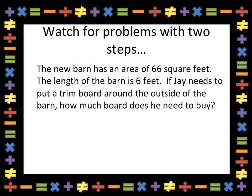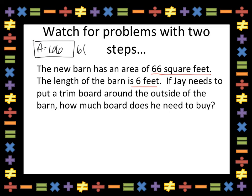What's really important with these problems is to read carefully. A lot of times they give you the area or the perimeter, and the answer is in fact the other calculation of area or perimeter, making it a two-step problem. Look at how I do this one. The barn has an area of 66 square feet. The length of the barn is 6 feet. If Jay needs to put trim board around the outside of the barn, how much board does he need to buy? To put a board around the entire outside of the barn would be to find the perimeter. So the answer to this problem is the perimeter of the barn.